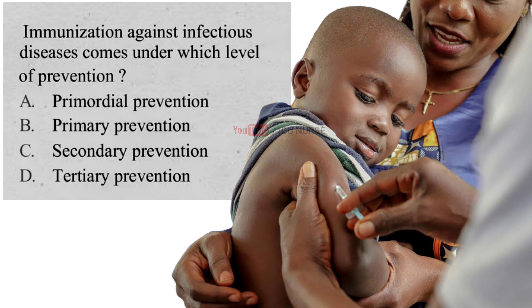Immunization against infectious diseases comes under which level of prevention? A. Primordial Prevention, B. Primary Prevention, C. Secondary Prevention, D. Tertiary Prevention. And the correct answer is B. Primary Prevention. Primary prevention includes those preventive measures that come before the onset of illness or injury and before the disease process begins. Examples include immunization and taking regular exercise to prevent health problems developing in the future.